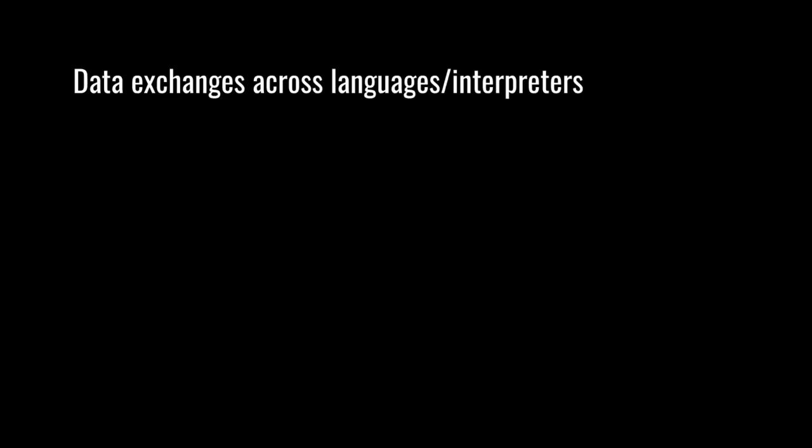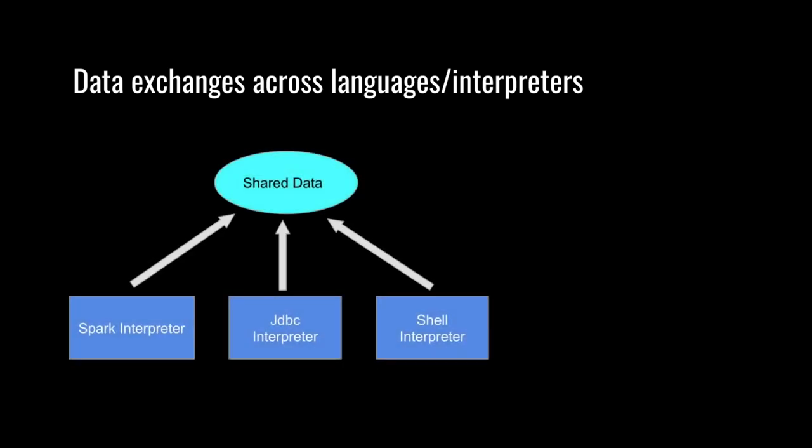The next feature is data exchange across languages and interpreters. Usually a complex task involves multiple tools, so how to exchange data across interpreters is pretty important. In Zeppelin, there are two data formats that can be shared across interpreters: string data and table data. You can share a string or table data across languages and interpreters.